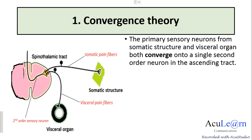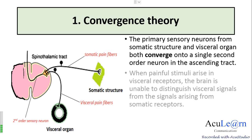When we talk about the theories of referred pain, two theories have been put forward. The first is the convergence theory. The primary sensory neuron from the somatic structure and the visceral organ both converge onto a single second-order neuron in the ascending tract. The somatic pain fibers and visceral pain fibers both converge onto the same second-order sensory neuron, which is carried to the brain via the spinothalamic tract.